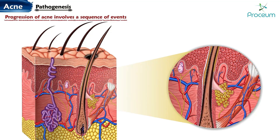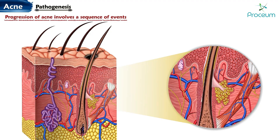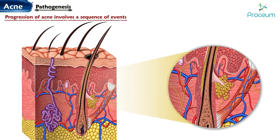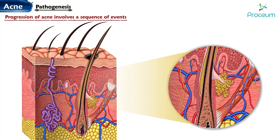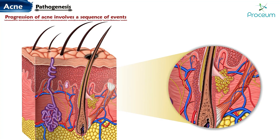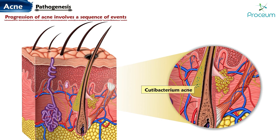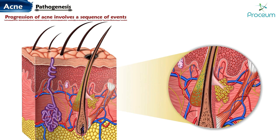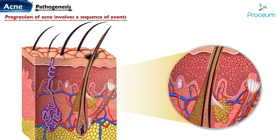The upper part of the follicle becomes obstructed by the comedone, causing the lower part to dilate. Eventually, the dilated follicle may rupture, releasing its contents — such as keratin, free fatty acids, and triglycerides — into the surrounding dermis. In this dermal environment, Cutibacterium acnes, a type of bacteria, thrives and multiplies.